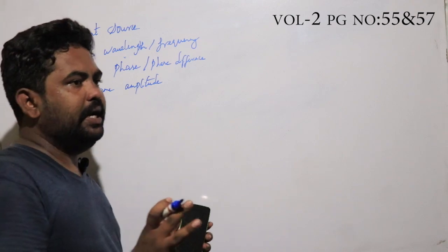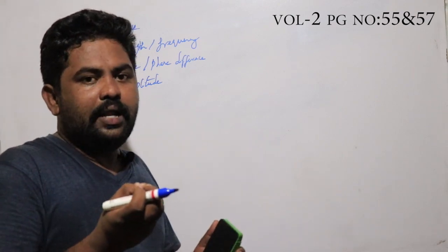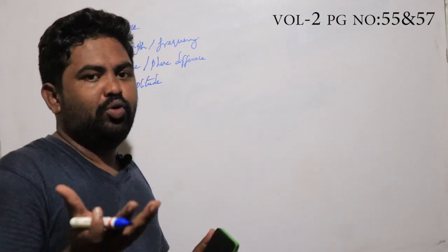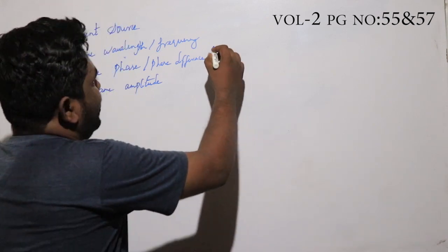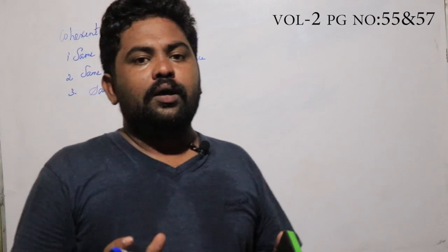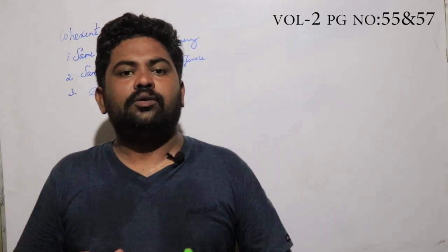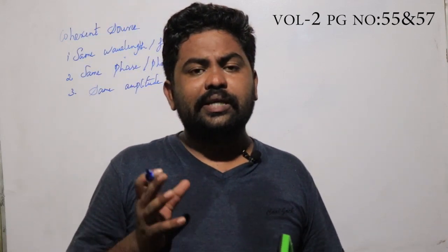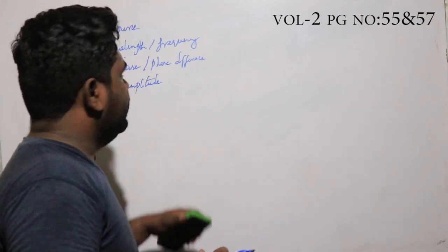Coherent sources - when you are in a double slit experiment, we will use the same phase, wavelength, frequency, and amplitude. That will be coherent sources.